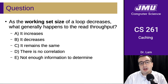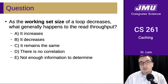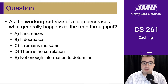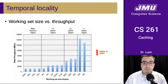As the working set size decreases, this means it's going to fit into higher and higher levels of the memory hierarchy, which means that the read throughput is going to increase because the higher levels of the hierarchy are faster. If you did a series of experiments, you might get a graph that looks like this.